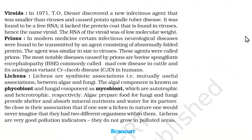In 1971, T.O. Diener discovered a new infectious agent that was smaller than viruses and caused potato spindle tuber disease. It was found to be a free RNA that lacked the protein coat found in viruses — hence the name viroid. The RNA of the viroid was of low molecular weight.